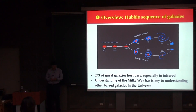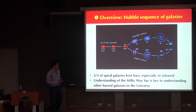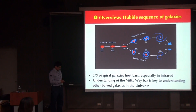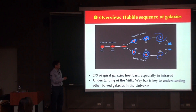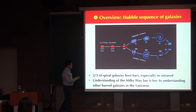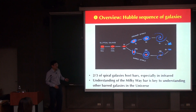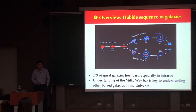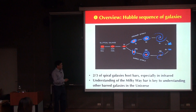As Yen-Ting mentioned, when you look at galaxies in the universe, they can normally be divided into two broad types: elliptical galaxies and spiral galaxies. Spiral galaxies are divided into two subtypes: ordinary spirals and barred spirals. Although the name 'ordinary' implies they are more common, recent infrared observations indicate that barred spiral galaxies are actually more common.